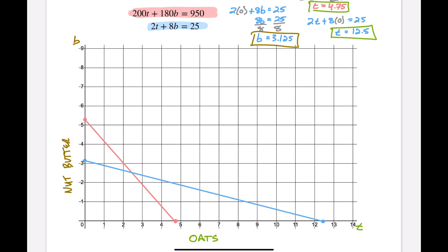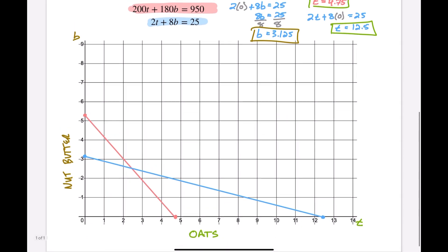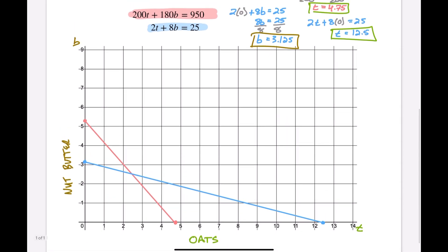And now where the intersection is, is our actual solution to this system. So now we know how many servings of each Ian should make. Well let's see. This falls right about halfway, almost right in the middle there. So I'm going to guess that this is 2.5 servings of oats and 2.5 servings of nut butter.